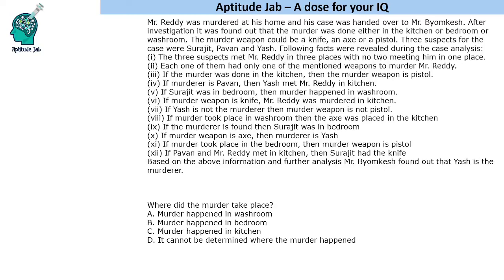Some facts were revealed during the case analysis. Three suspects met Mr. Reddy at three different places, and two of them met him at one place. Each one of them had only one of the weapons. Conditions are given such as: if he was the killer, then this is the weapon, and if he is the killer, then he met that person here.